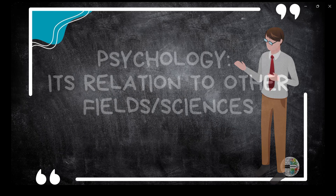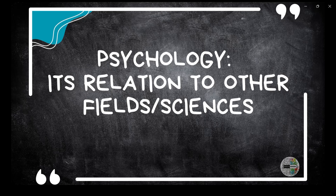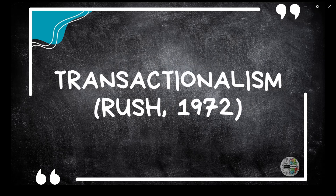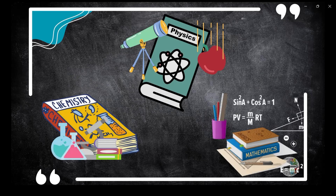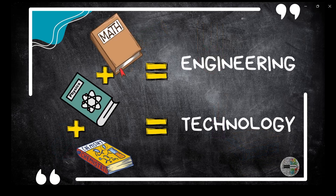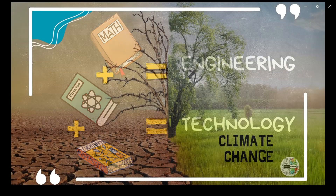Our first topic: psychology, its relation to other fields or sciences. To understand the relation of psychology with other sciences, first we must understand the idea of transactionalism. Earlier we had singular disciplines like physics, chemistry, math, etc., but if we put together two or more of these, we have new fields of study like engineering, technology, etc. It was understood that one field of study cannot thrive on its own if it wanted to progress and make advancements. Instead, we must acknowledge that everything in this universe intersects at some point to make way for something even better.